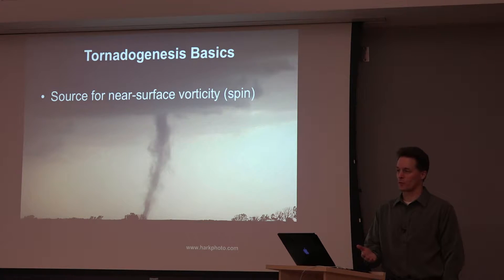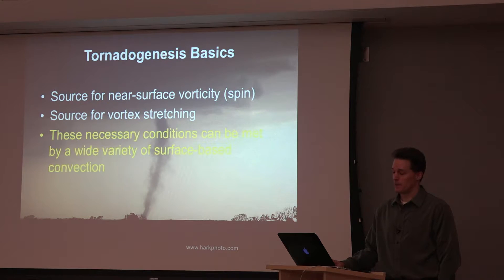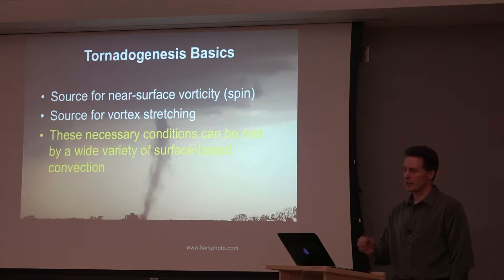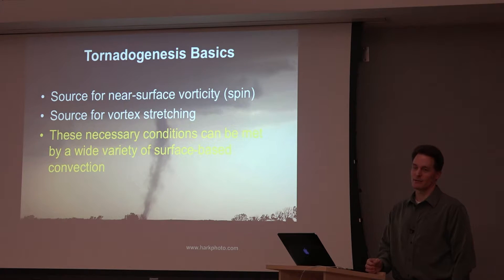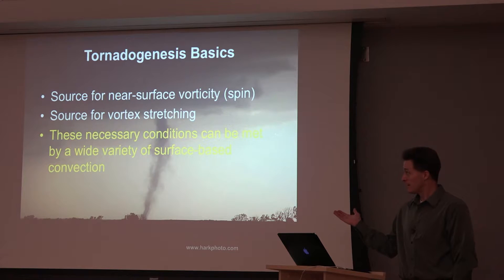We need near-surface vorticity — simply put, a swirl or spin near the ground — and you need something to stretch that. The scary part for an operational meteorologist or storm chaser is: how many thunderstorms cannot possibly have some sort of low-level spin and updraft stretching? Anyone who watches convection along the Gulf Coast or the Florida sea breeze wonders why there's a random tornado or two — eventually you co-locate some sort of swirly with an updraft.